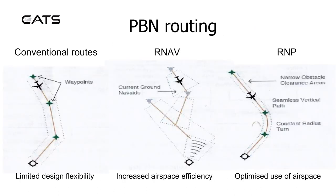PBN Routing: With conventional routes, there is limited design flexibility. With area nav, there is increased airspace efficiency. With RMP, there is optimized use of airspace.